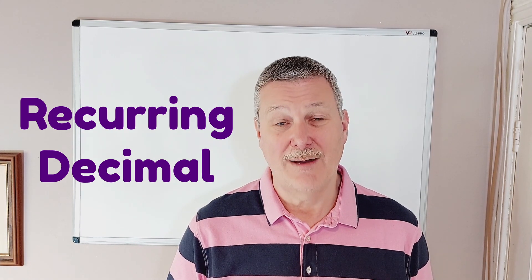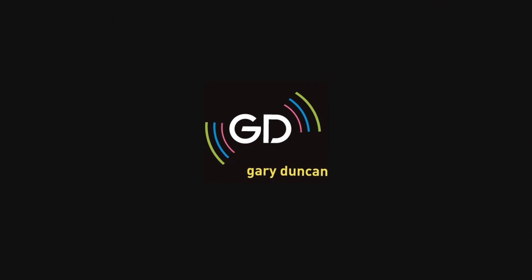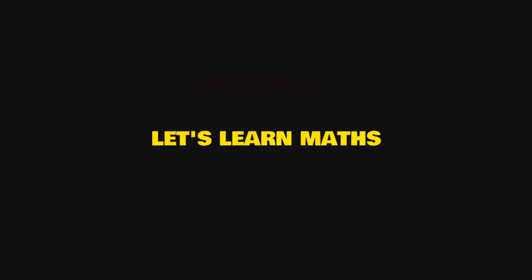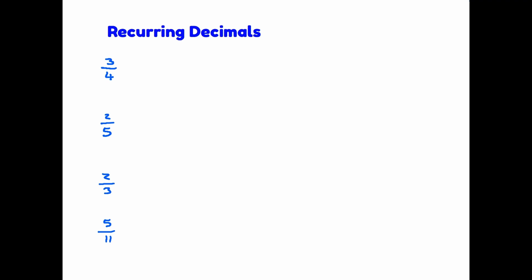So let's have a look at the method. I usually like to start with definitions. So let's have a look at what a recurring decimal actually is. Any fraction can be converted into a decimal but some convert rather more easily than others.